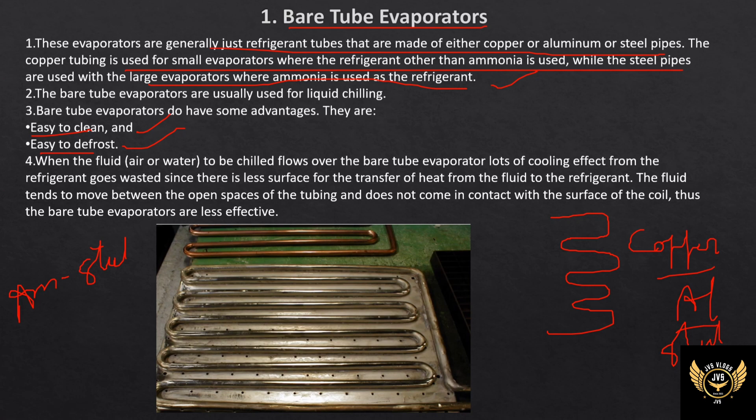The worst aspect of the evaporation method is defrosting. We have to use heat to defrost the network. The heat is used to defrost and dry — so the heat is easy to remove.